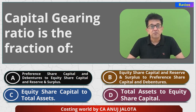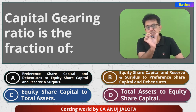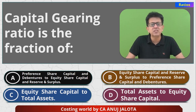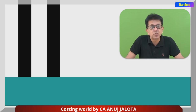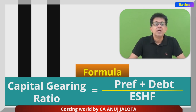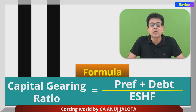For preference shares we pay preference dividend. So we want to know the ratio of fixed-bearing funds divided by the flexible or owner's fund. Preference share capital and debentures form one group — the common thing is we pay fixed cost for them. For equity, there is no fixed cost; the company might or might not declare dividend depending on its interest.